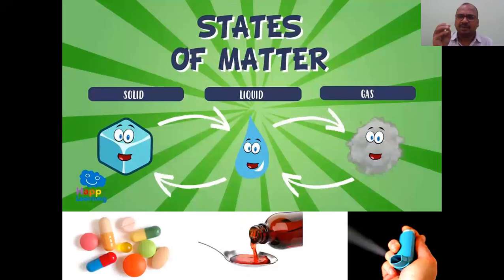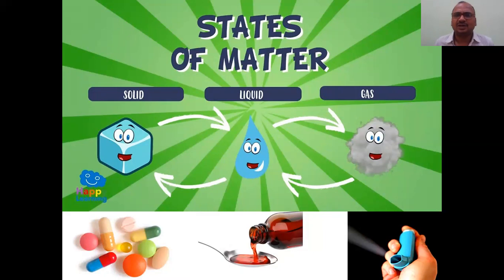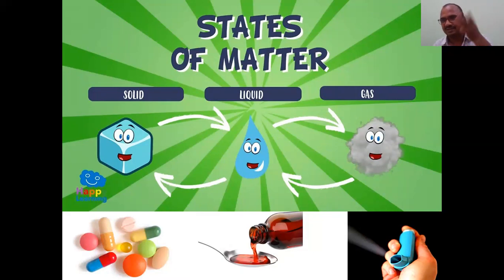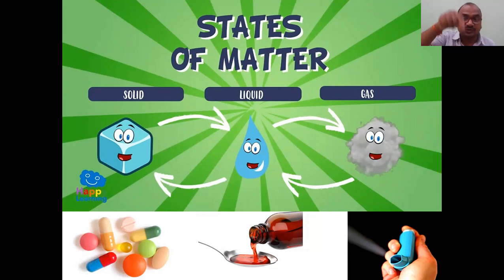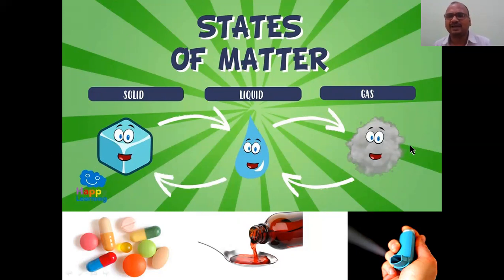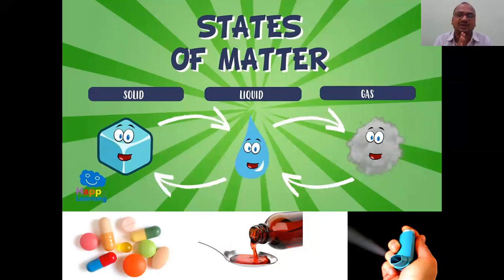Key concepts in Physical Pharmacy start with states of matter. Even a fourth or fifth class student can tell there are three states — solid, liquid, and gas. Apart from these, there is a fourth state: plasma, which is also used in pharmacy — in plasma chromatography. Solids have tightly packed molecules, liquids are somewhat loosely packed, and gases are very loosely packed.